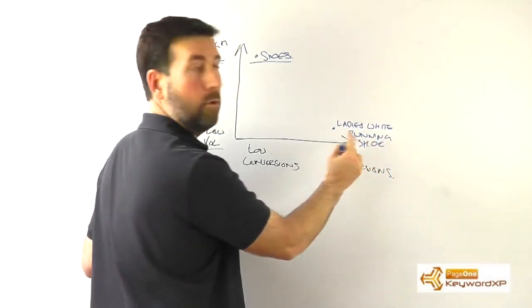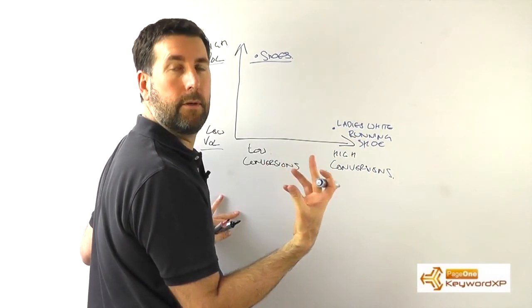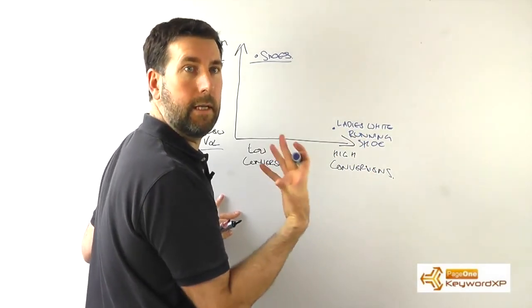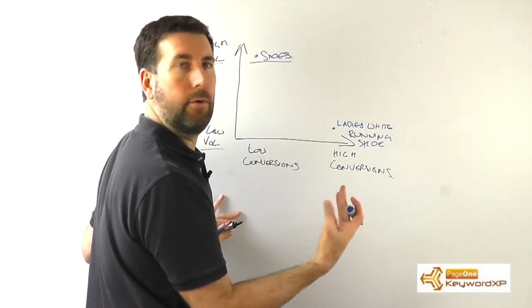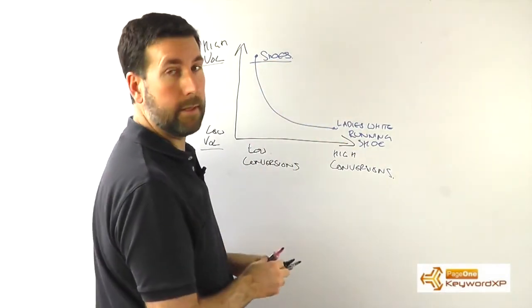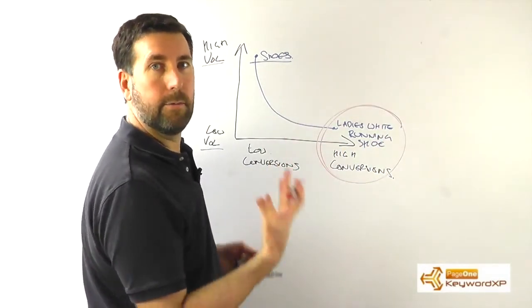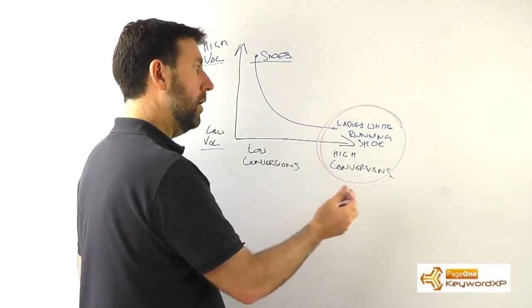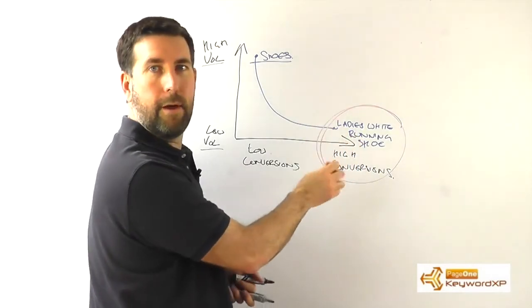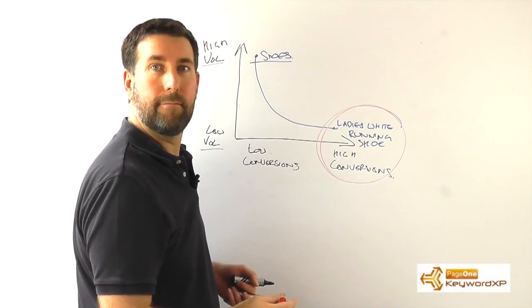So, ladies white running shoe, for example, you can see that that is a buying keyword, all right? So that person knows exactly what they're looking for, and the whole chart looks like that. And the key thing to understand is this is where the buyers are, it's where the conversions happen. So if you can attract more of those, then you're going to get more conversions and more buyers on your site.